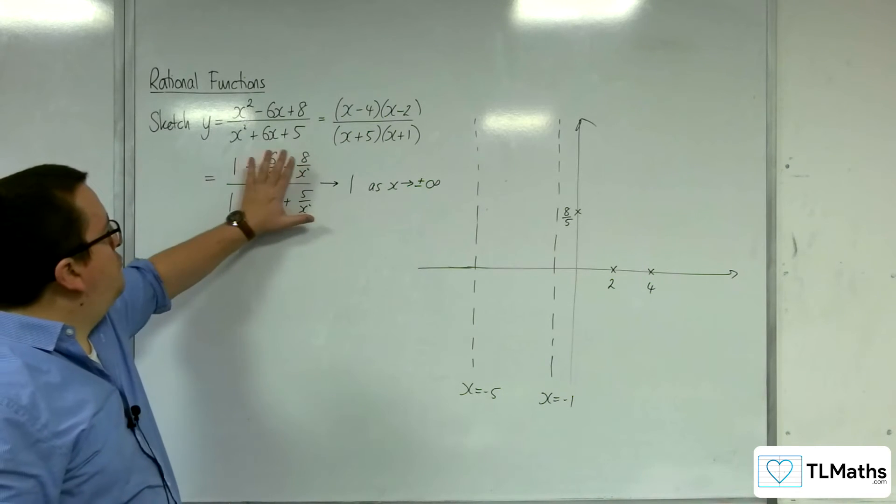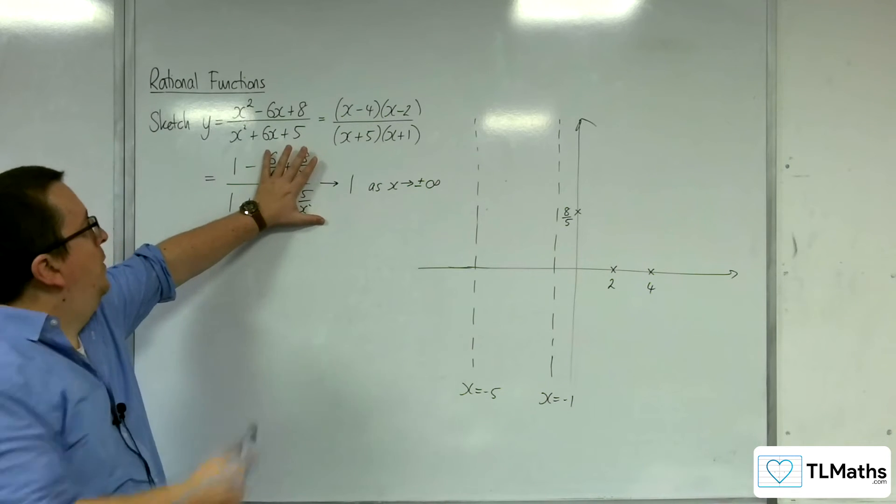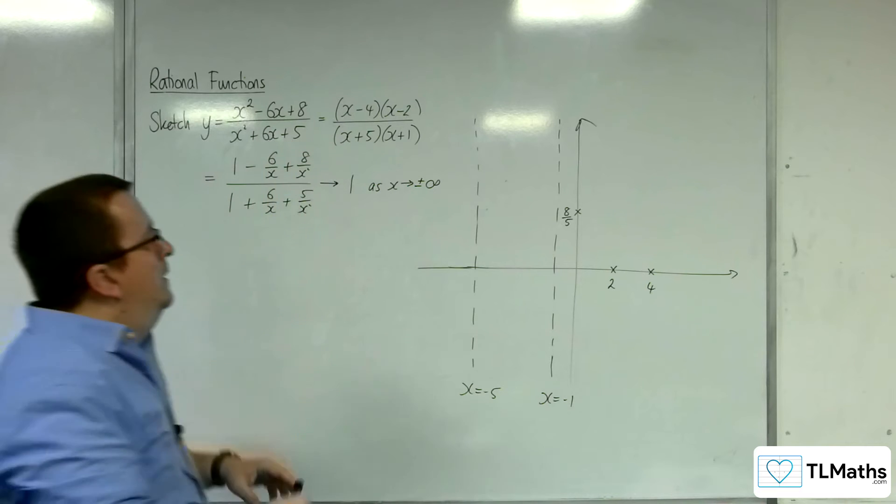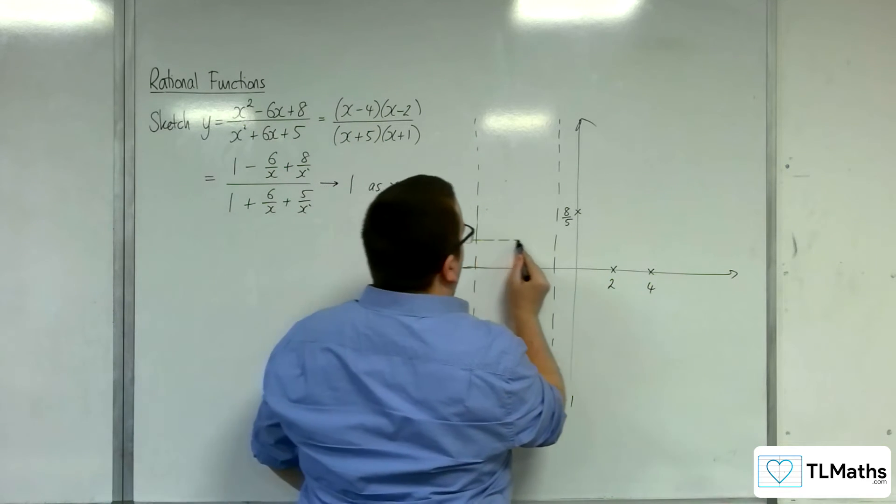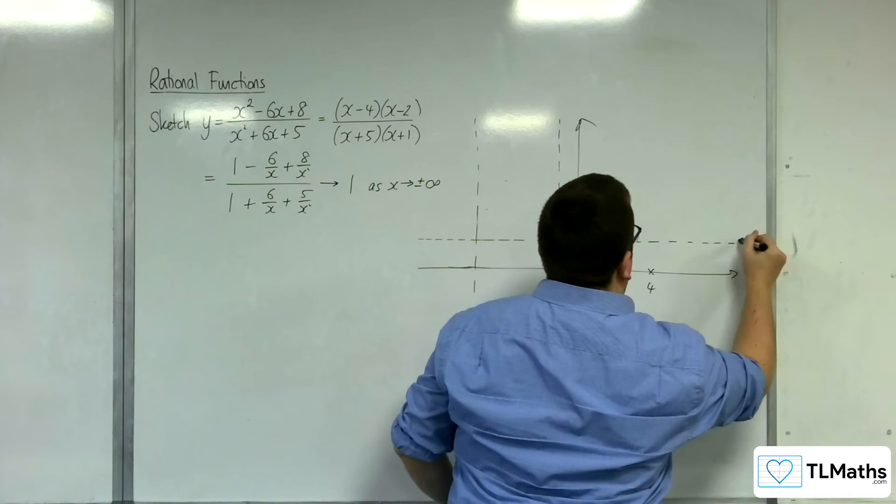So all of those fractions will tend to 0, so we'll get y equals 1 over 1. So y equals 1 is a horizontal asymptote.